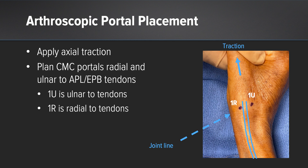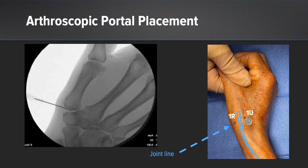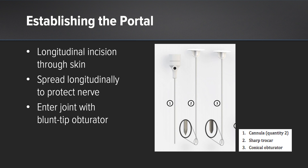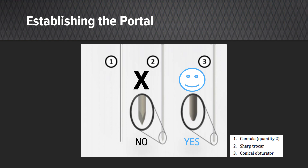Gentle traction is placed on the thumb CMC joint. The CMC joint can also be confirmed using a 25-gauge needle, placing gentle traction on the CMC joint and using fluoroscopy to confirm the placement of the 25-gauge needle. Once the position of the portal has been established, a longitudinal incision is made through the skin. Spreading is performed longitudinally in order to protect the radiosensory nerve. The portal can be entered using a blunt trochar. Using a sharp trochar can injure both the tendon and/or the nerve.